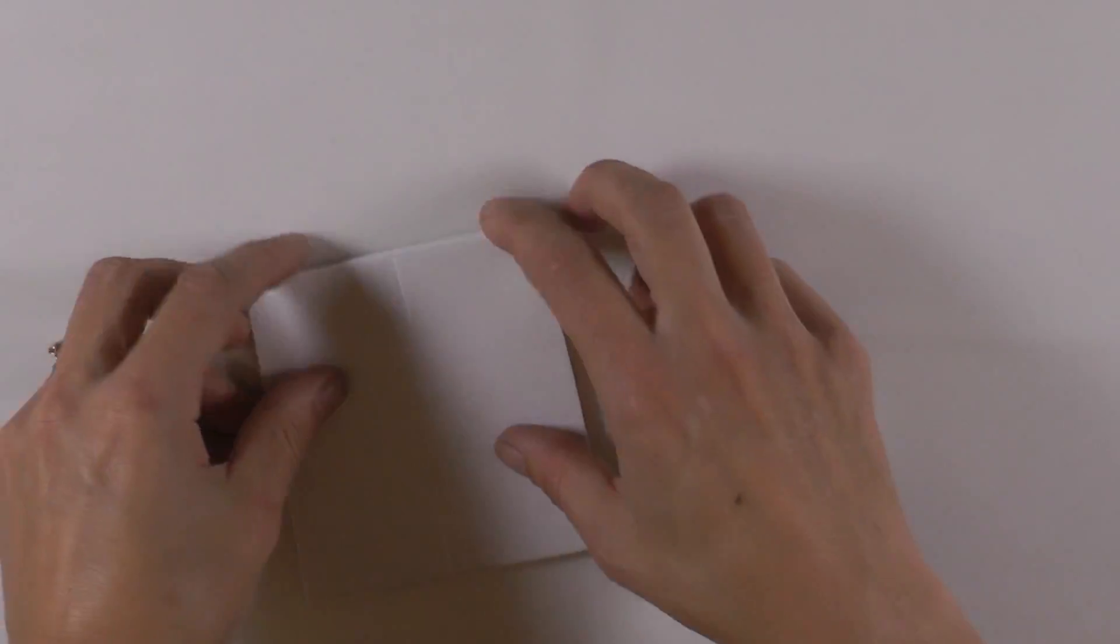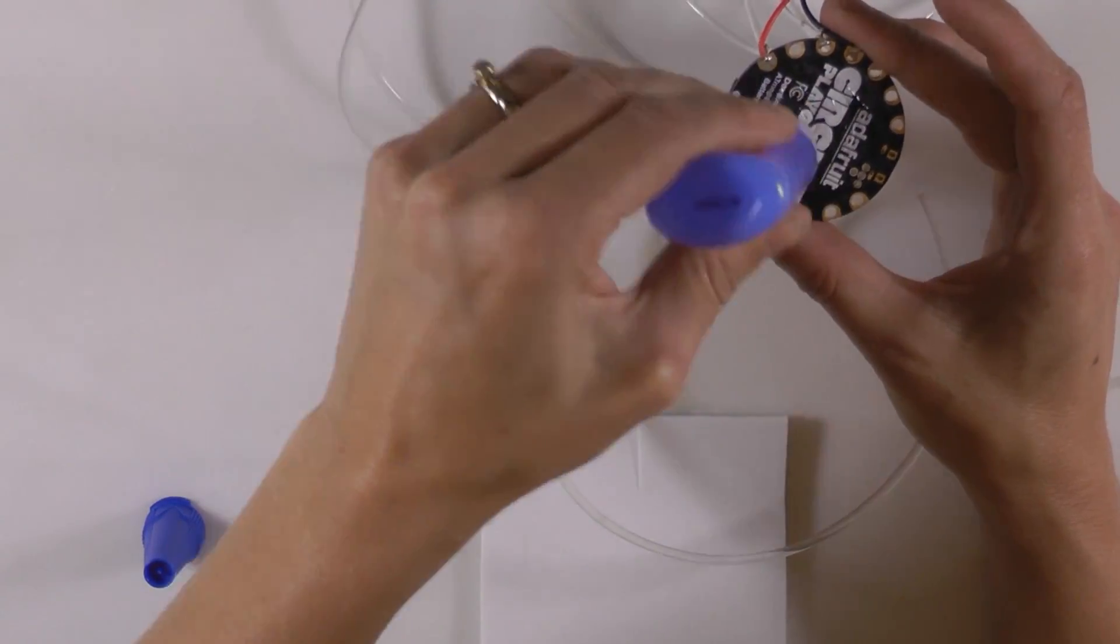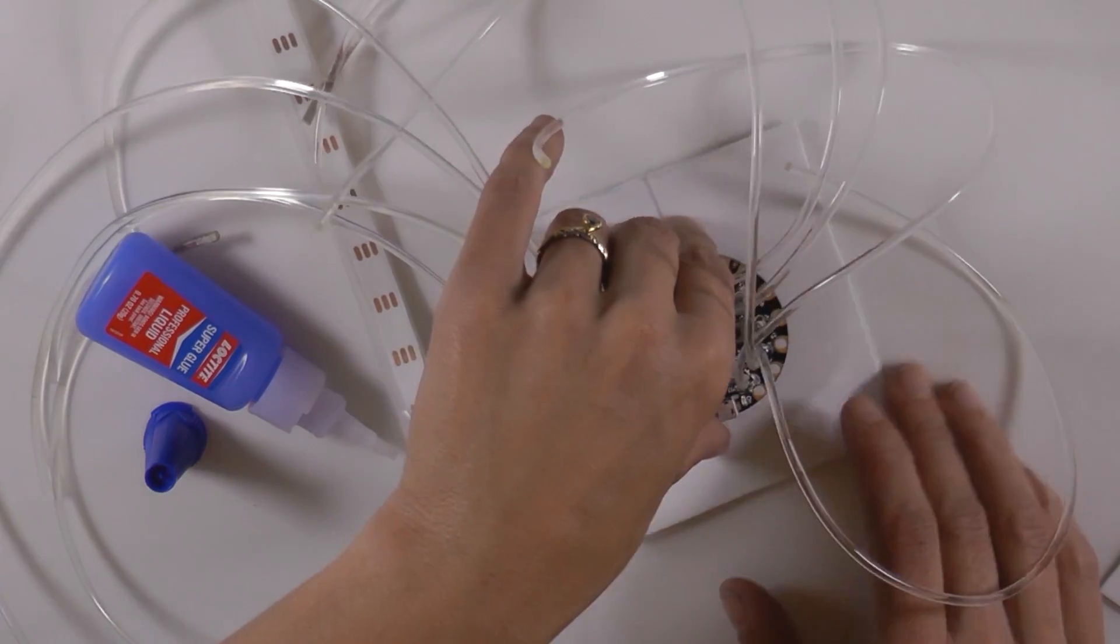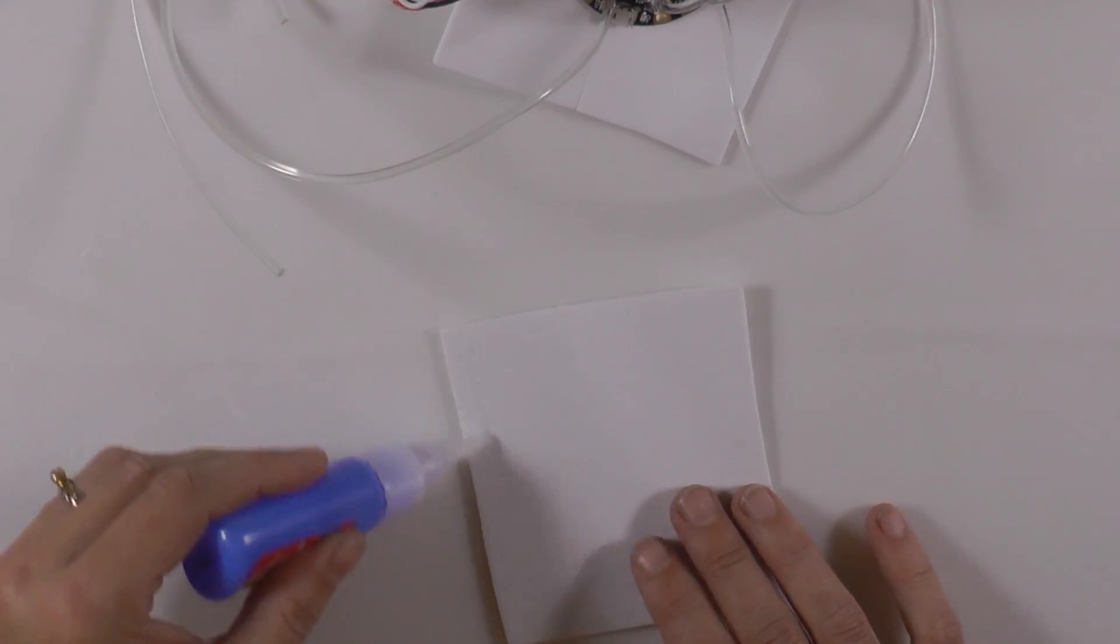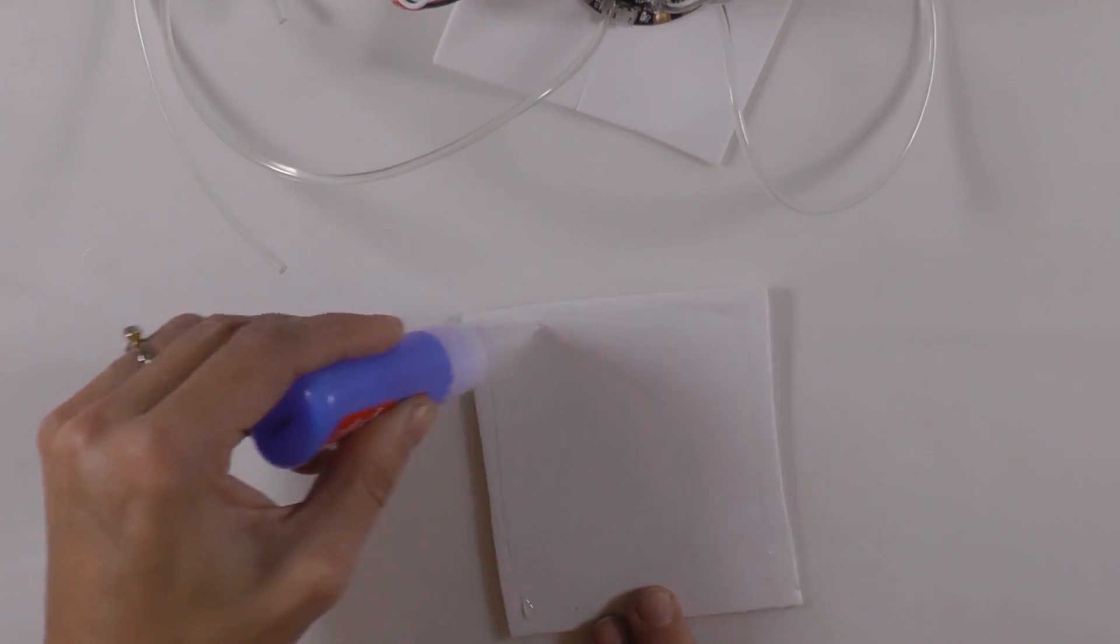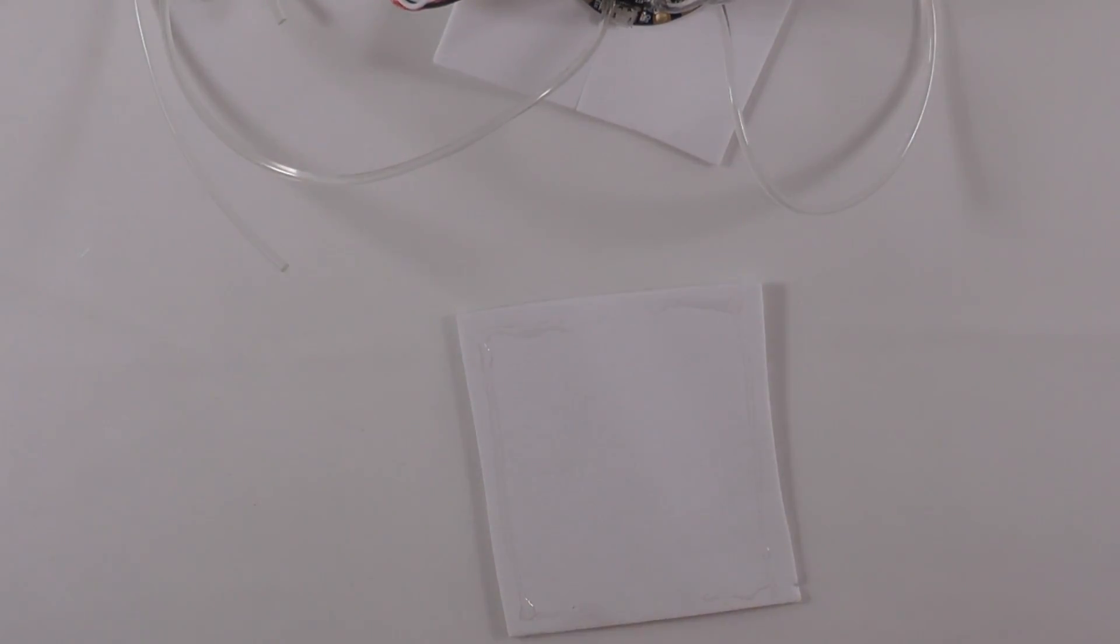Cut two small squares of craft foam. Super glue the circuit playground onto one of them. Super glue the other onto the back on three sides to make a pocket for the battery.